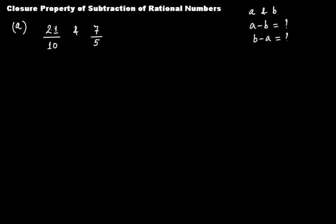To understand this we have taken two rational numbers 21 over 10 and 7 over 5. Now we have to subtract 7 over 5 from 21 over 10. So the first step is 21 over 10 minus 7 over 5. Now the next step is you take LCM of the denominators, that is 10 and 5. The LCM of 10 and 5 will be 10.